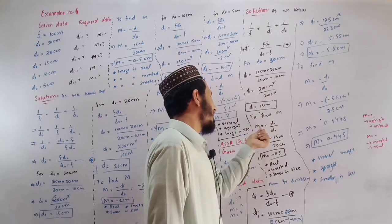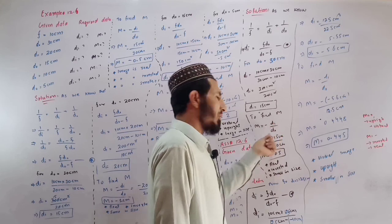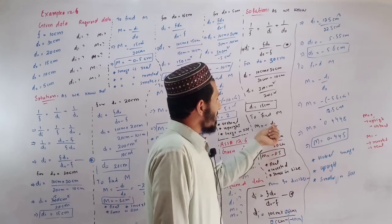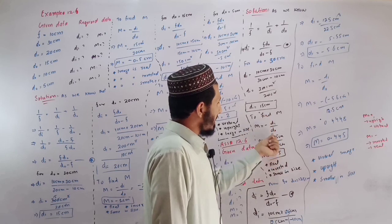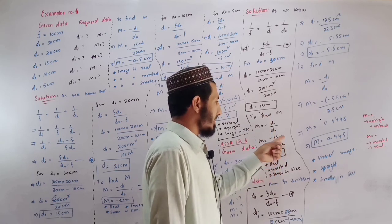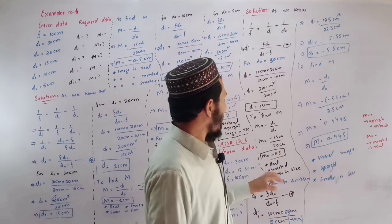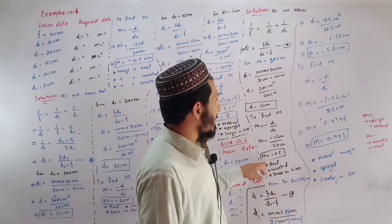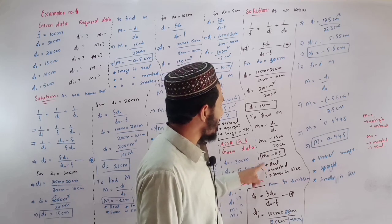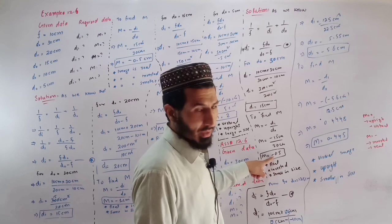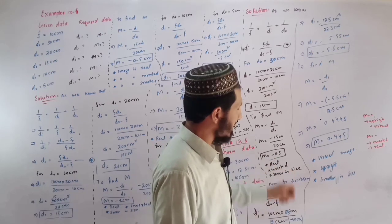m equals minus di divided by d0, minus 15 divided by 30, minus 0.5. Magnification is minus 0.5, so the image is inverted and smaller in size.